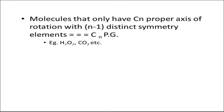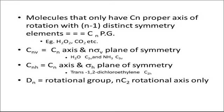Molecules which have a Cn proper axis of rotation have only N-1 distinct symmetry elements, because the Nth will be the original, and the point group will be Cn. For example, H2O2 and CO2 — the number of rotations will be N-1 because the Nth is the original.